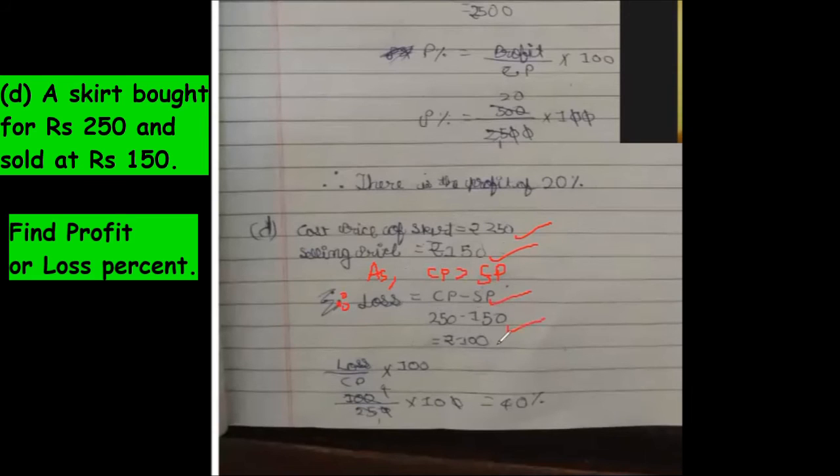100 rupees ka loss ho gaya. Now, loss percentage equals loss upon CP into 100. Now CP denominator me? Yeah. CP is liya because we have first CP came here. That was a logic.